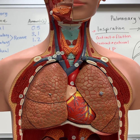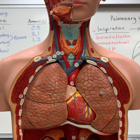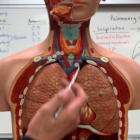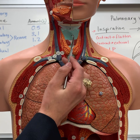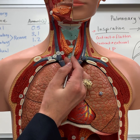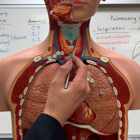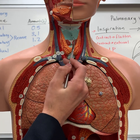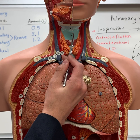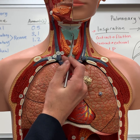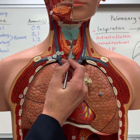Okay Bobcats, in this video we're going to go over the respiratory structures found here on the torso model. The first thing I'll point out is the hyoid bone, which is here. You also have the thyroid cartilage. What's found on the thyroid cartilage is the laryngeal prominence, also known as the Adam's apple.